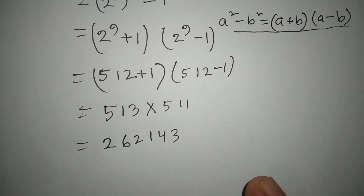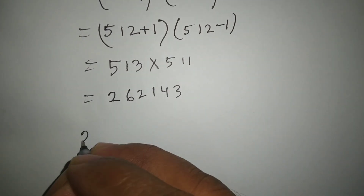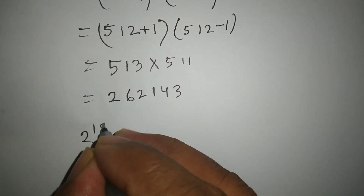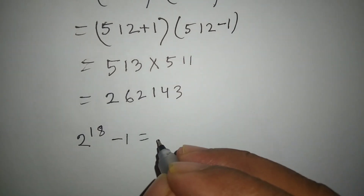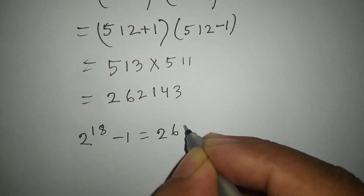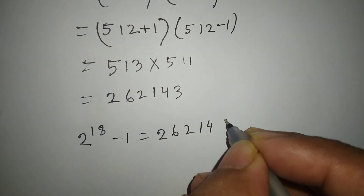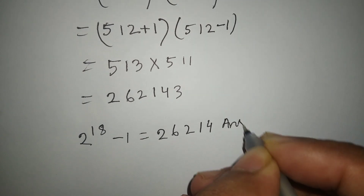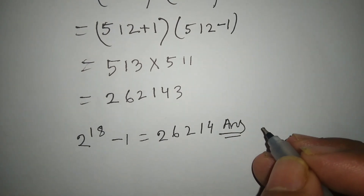That is why we can write 2 to the power 18 minus 1 is equal to 262143. That is the answer. Please like, comment, and subscribe. Thank you.